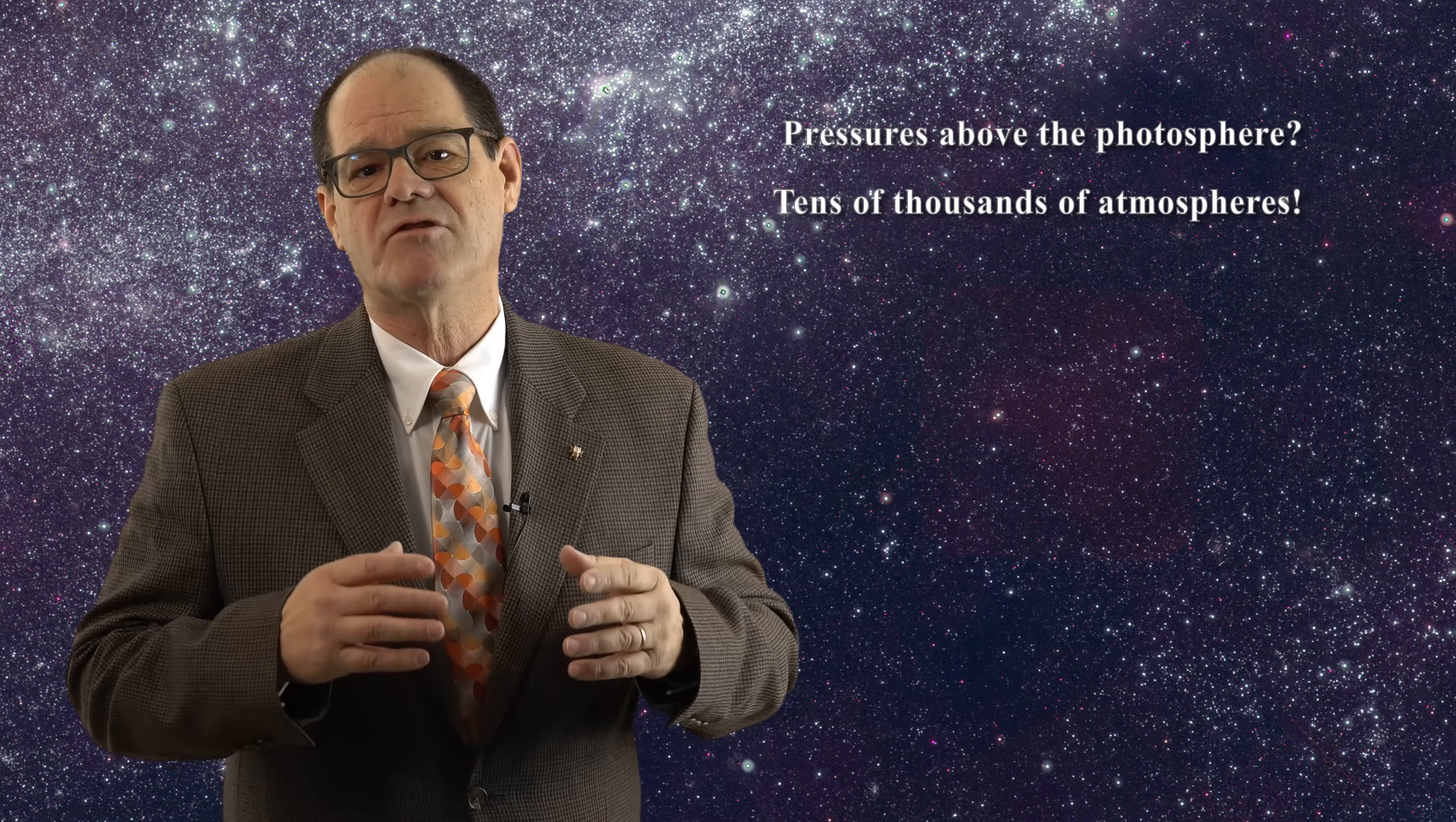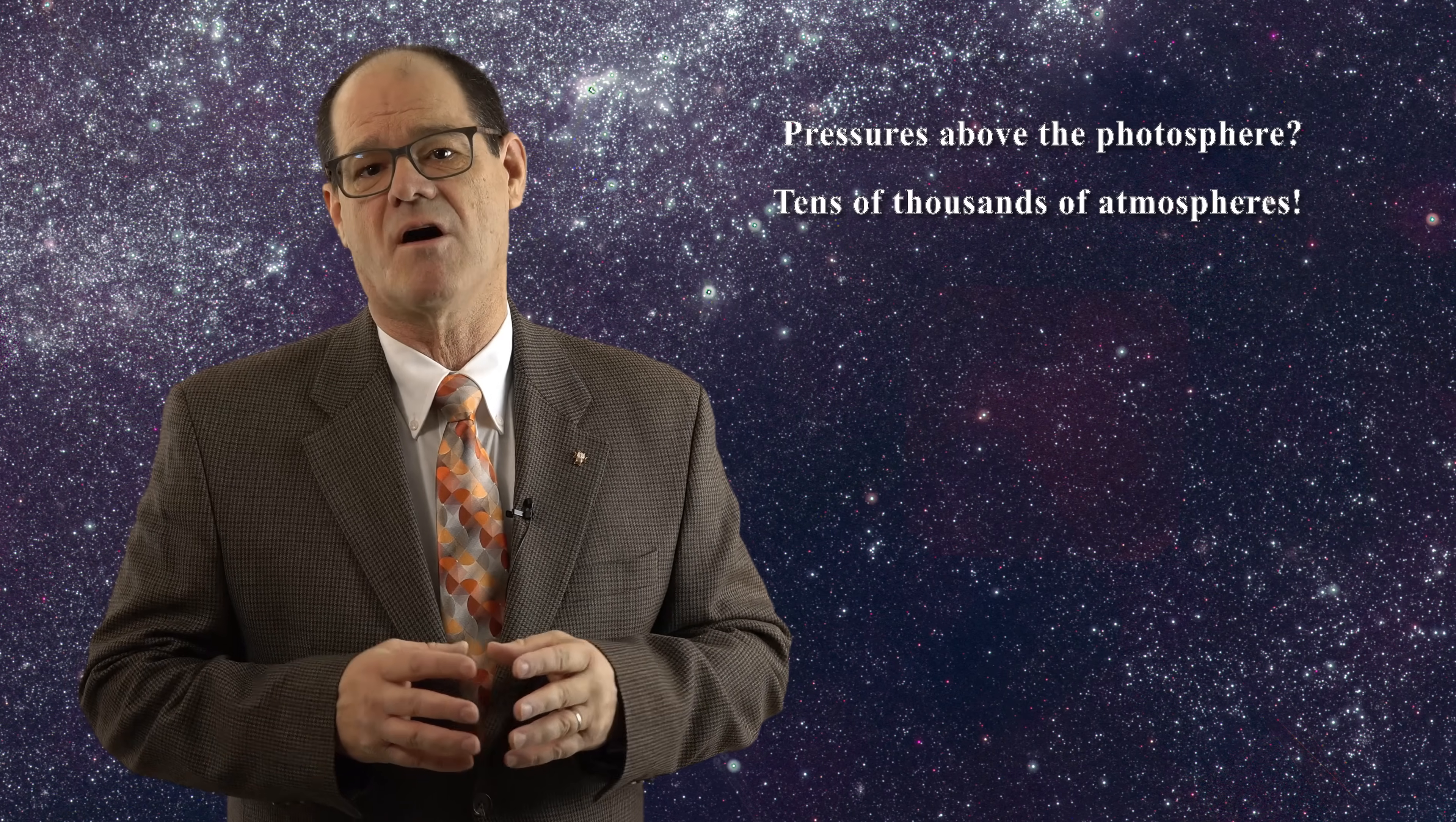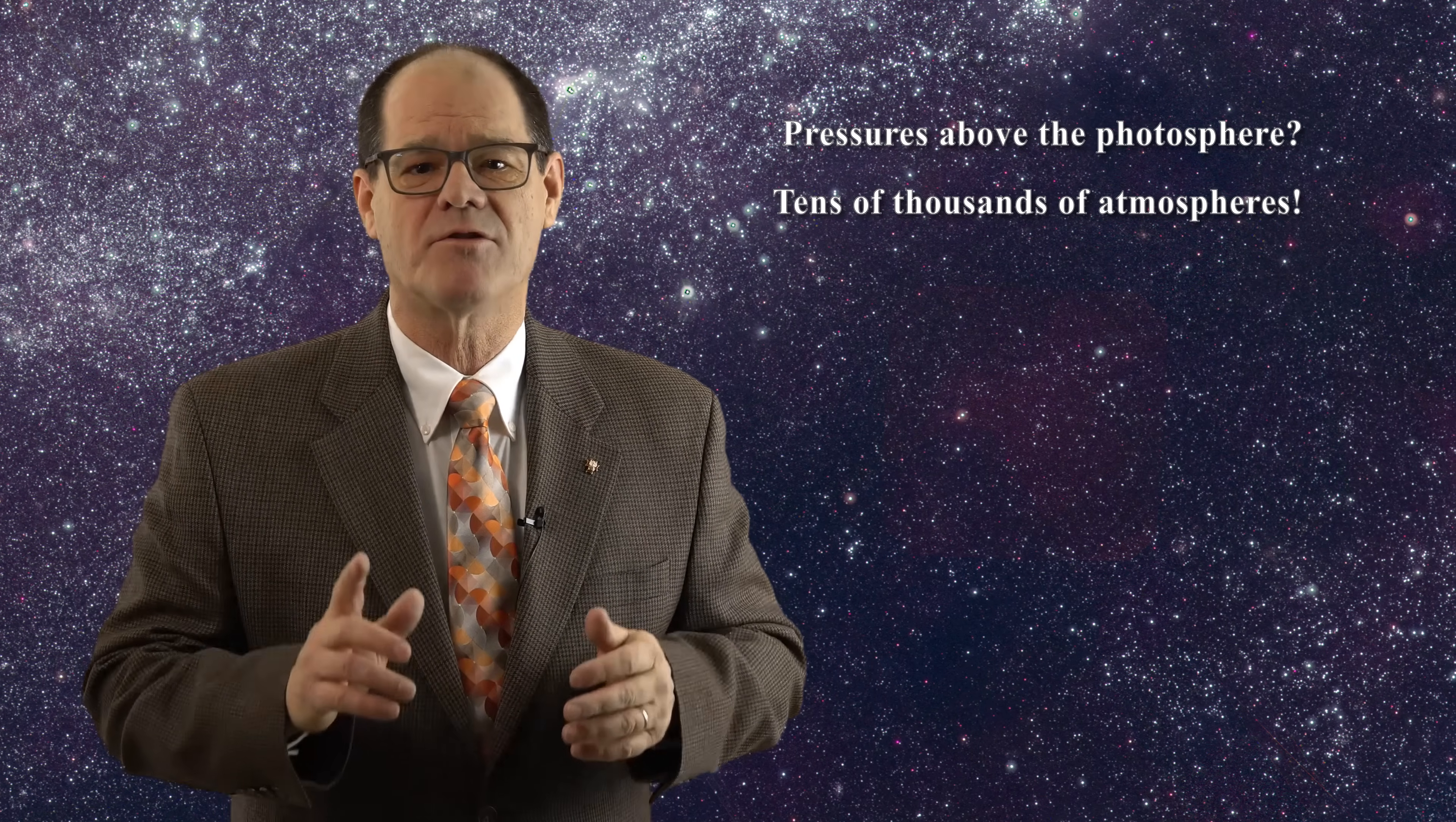The pressures above the photosphere are likely to be in the range of tens of thousands of atmospheres, and this further helps to explain the presence of type 1 metallic hydrogen on the surface of the Sun. The photospheric pressures and densities are not those of a vacuum.